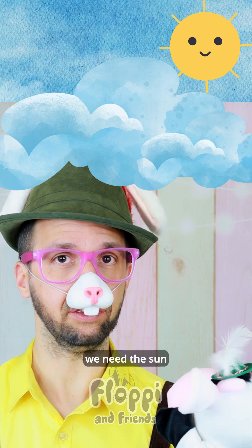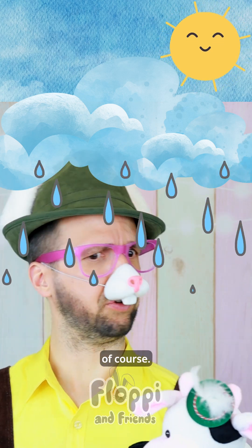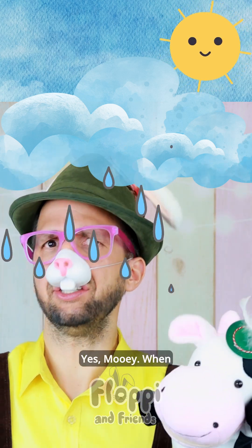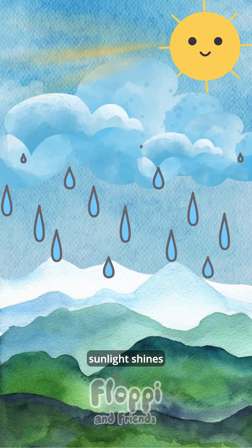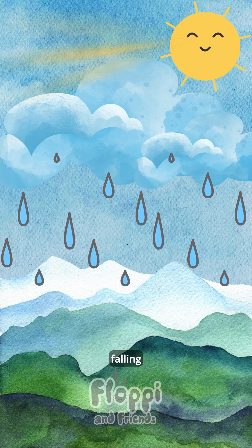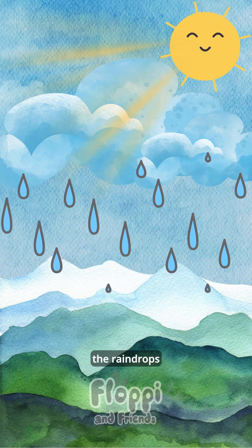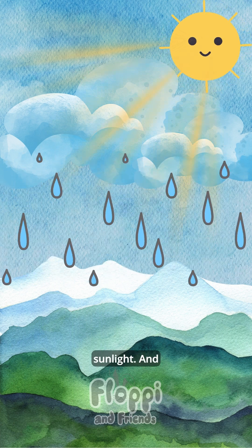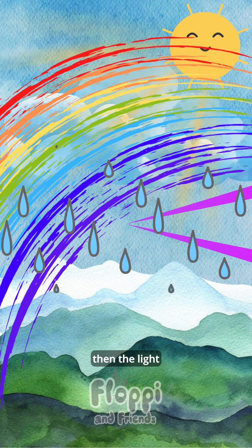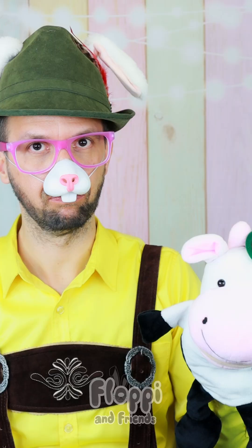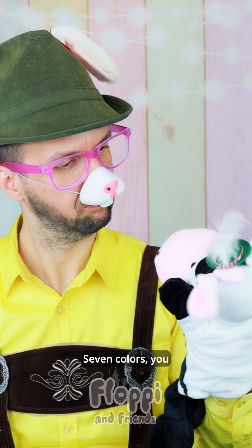No, Mooie, we need the sun and rain, of course. Sun and rain? Yes, Mooie. When sunlight shines on raindrops falling from the sky, the raindrops reflect the sunlight and then the light splits into seven colors. Seven colors, you say? Yes, Mooie, seven colors.